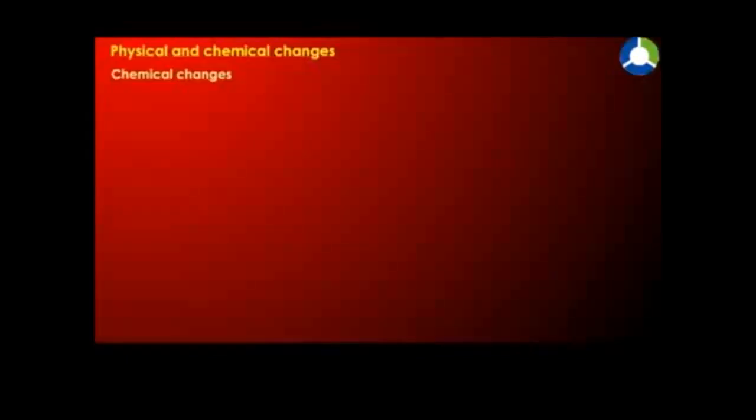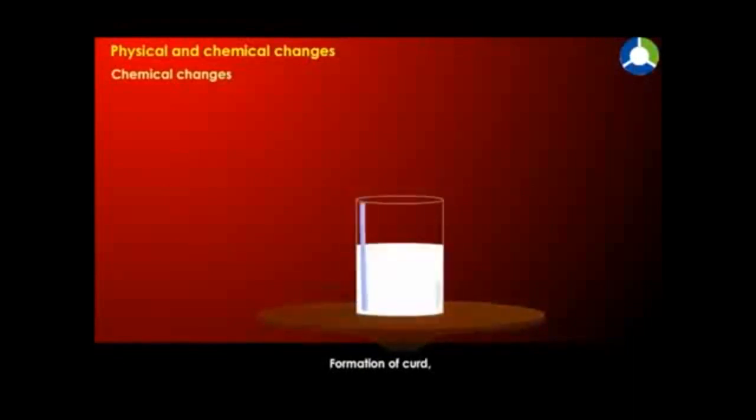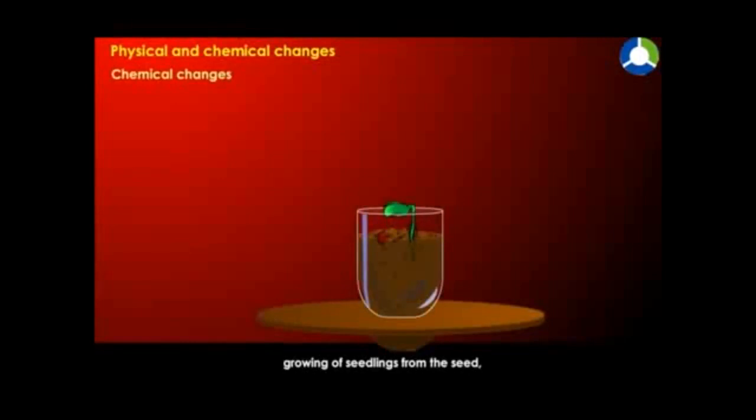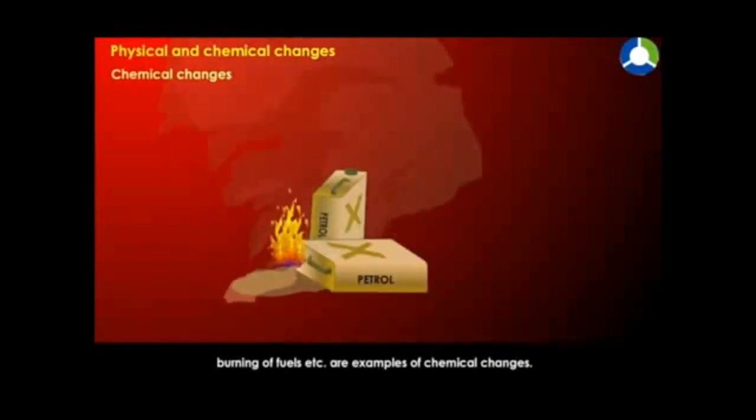Chemical Changes. A chemical change is a permanent change in which an entirely new substance is formed with different properties. Formation of curd, growing of seedlings from the seed, burning of fuels, etc. are examples of chemical changes.